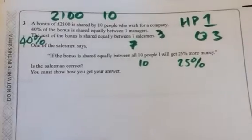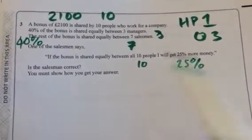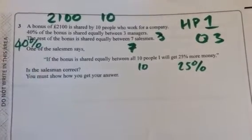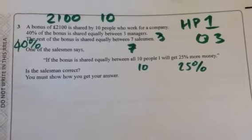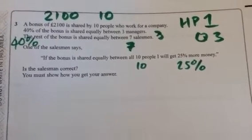We've got a question here. A bonus of $2,100 is shared by 10 people who work for a company. 40% of the bonus is shared equally between three managers. The rest of the bonus is shared equally between seven salesmen. Now, one of the salesmen says, if the bonus is shared equally between all 10, I'll get 25% more money.